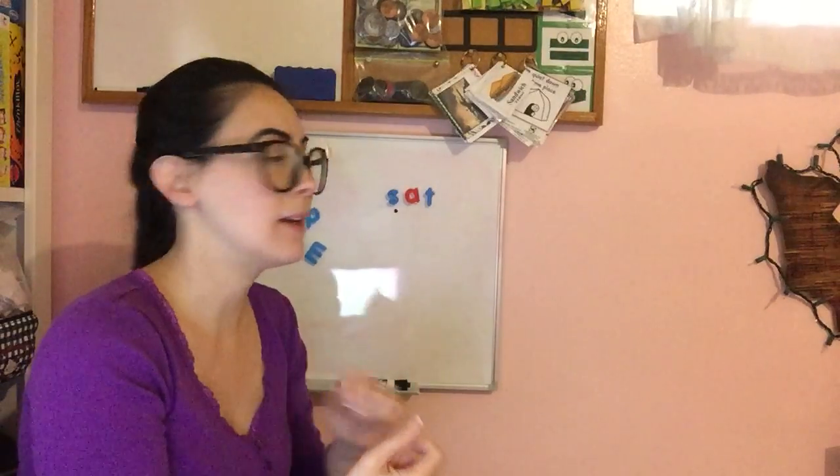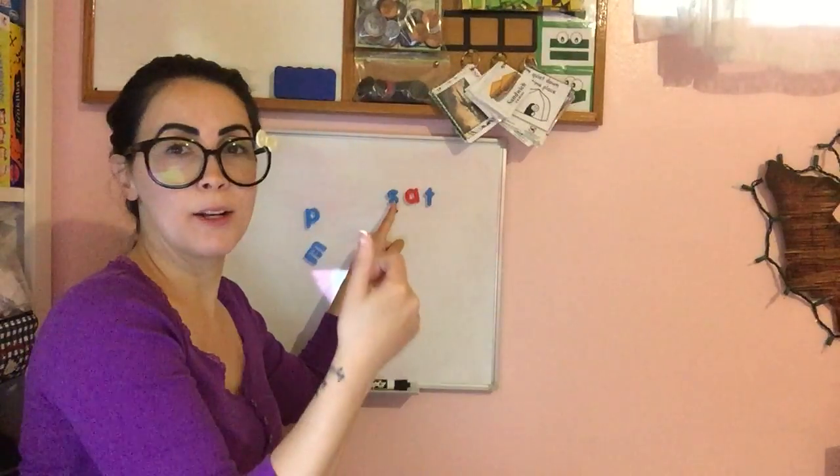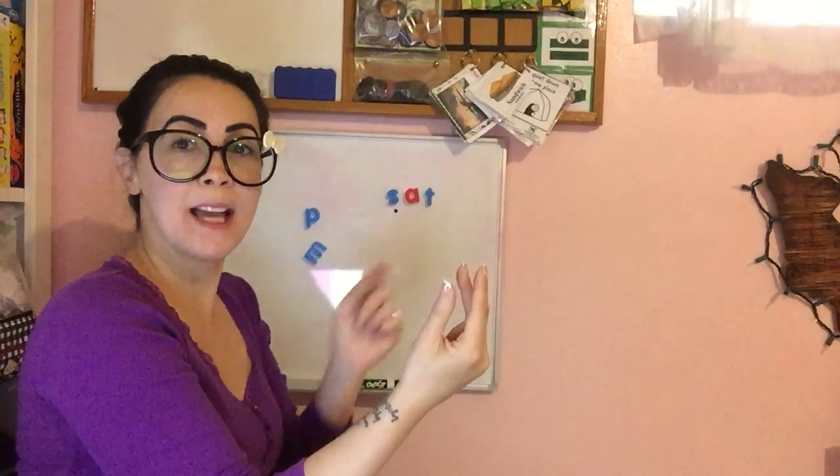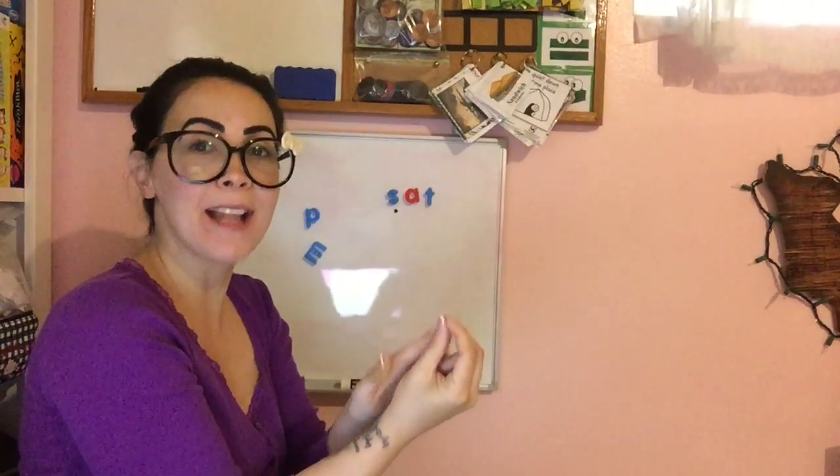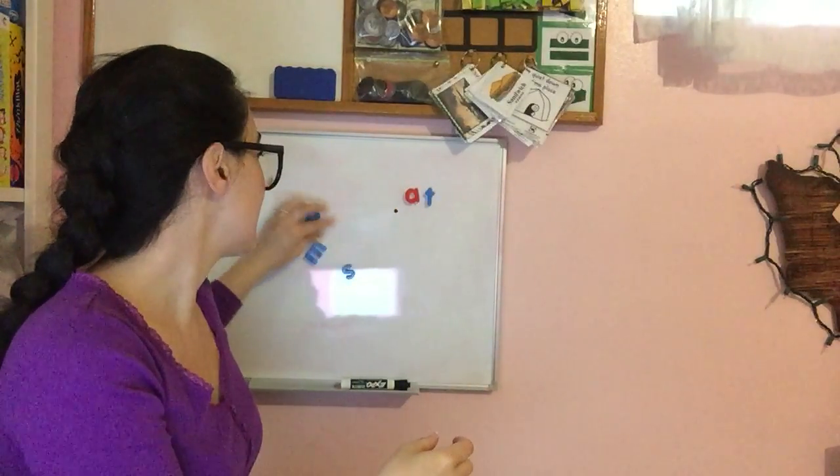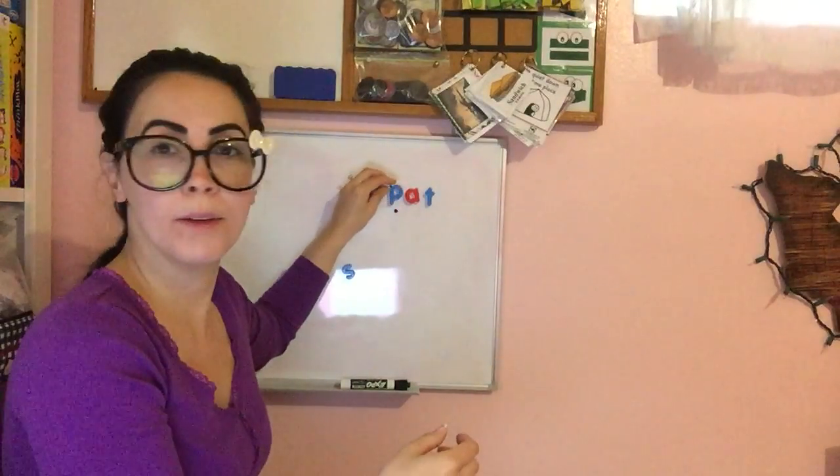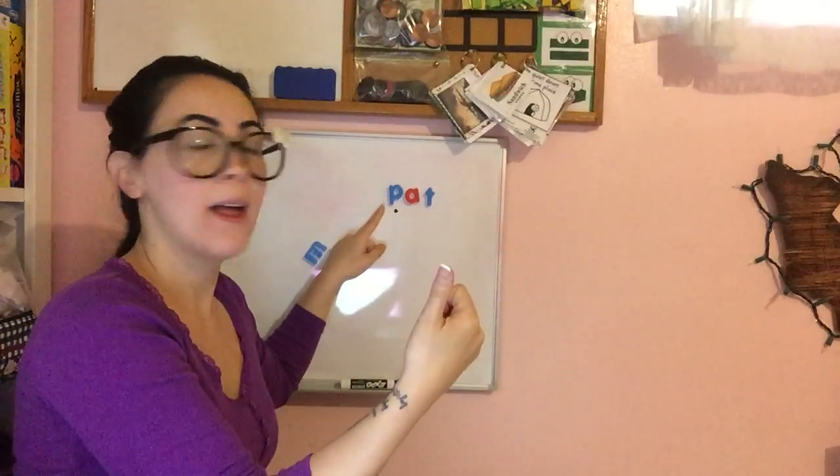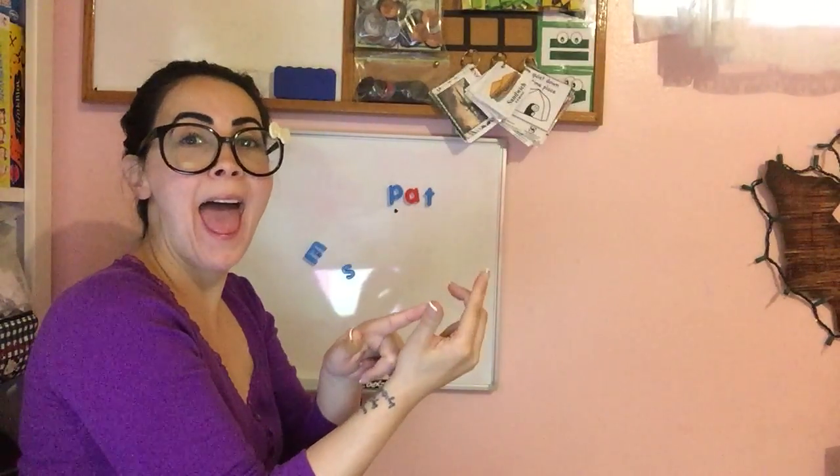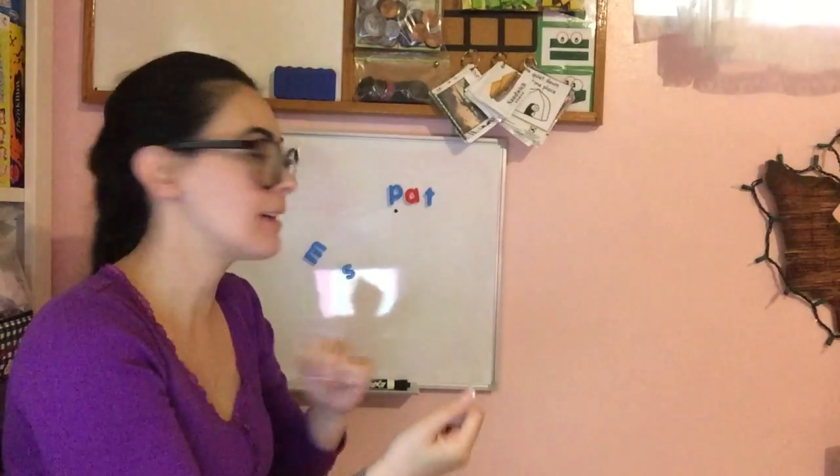So again, let's try that again. It goes 's-a-t'—put it together: 'at.' What's the word? Sat. So let's try a different letter here. Ready? 'p-a-t'—put it together: 'at.' What's the word? Pat.